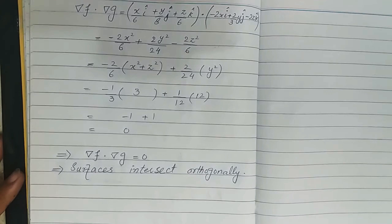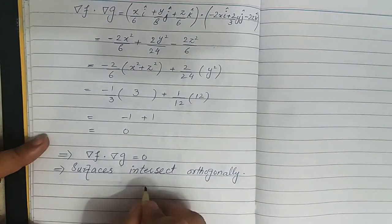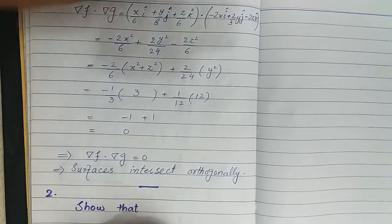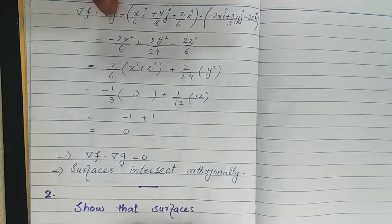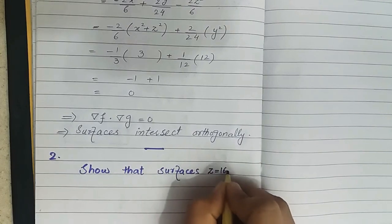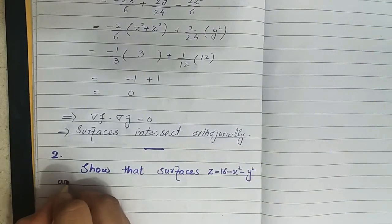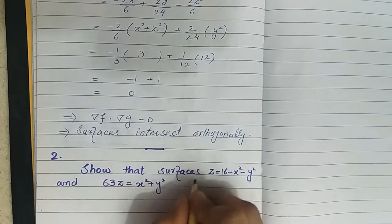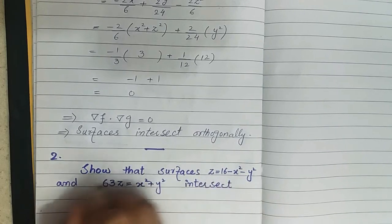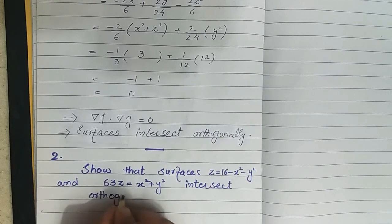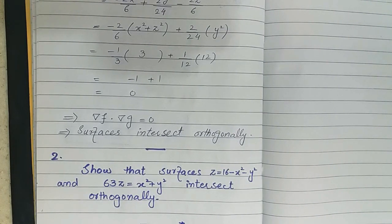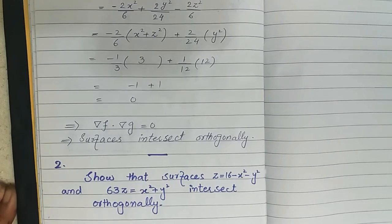Here is a question for practice: show that the surfaces z = 16 - x² - y² and z = x² + y² intersect orthogonally. To prove this, we have to show that the dot product of their gradient values at the intersection points is zero. That is all about today's lecture.